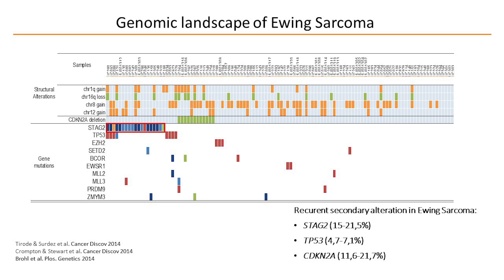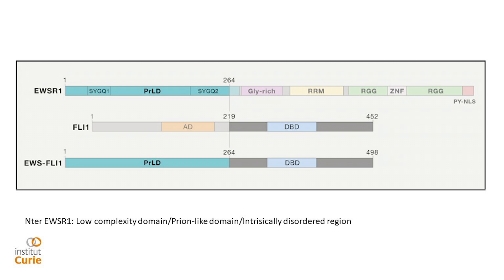Three secondary mutations can be observed: one is the cohesin member STAG2, which I'll speak about later. The other is P53, and the third is CDKN2A deletions. Apart from those three, very few additional genetic abnormalities.